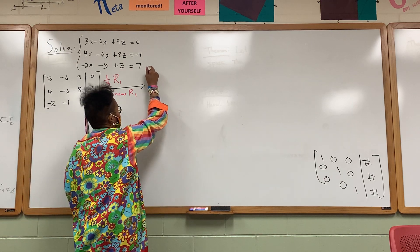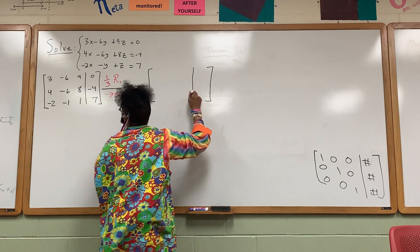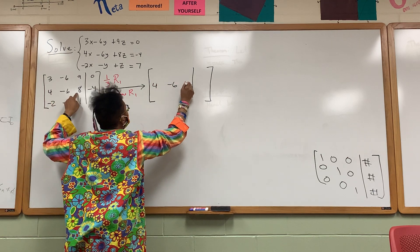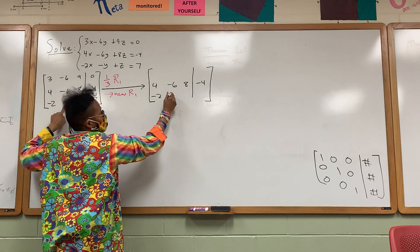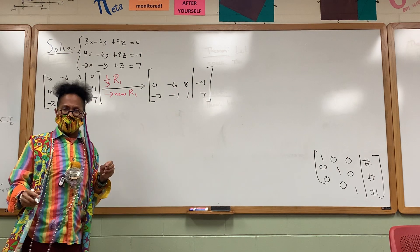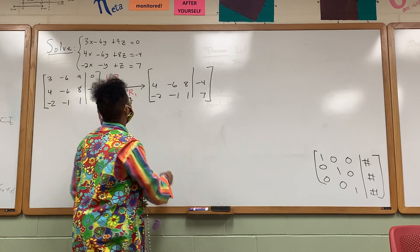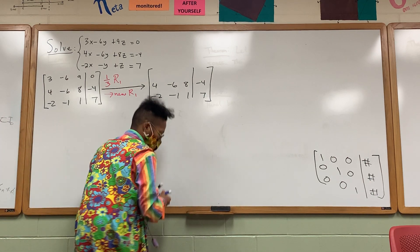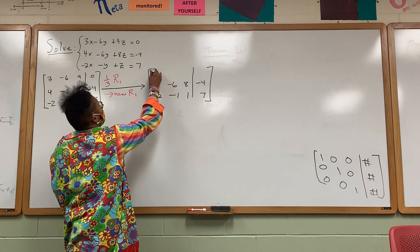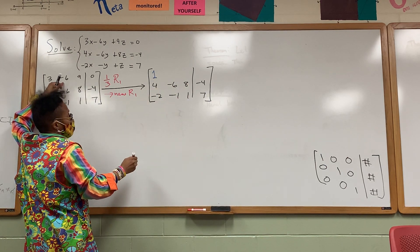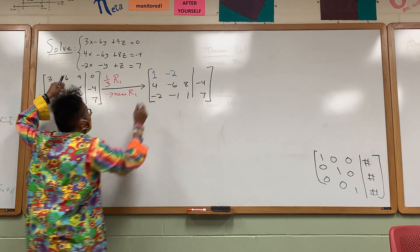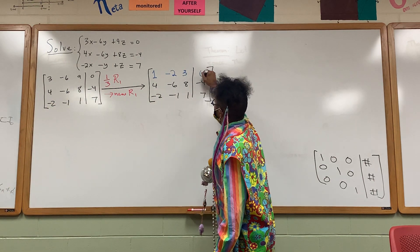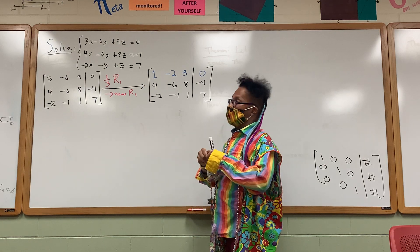We can do this in our head, which is dangerous, or we can do it on scratch work. Rows two and three stay the same. One-third times three is one. One-third times negative six is negative two. One-third times nine is three. And one-third times zero is zero. So we've completed step one of nine.